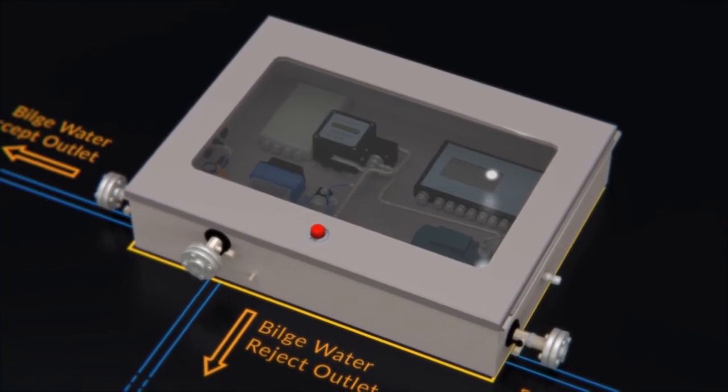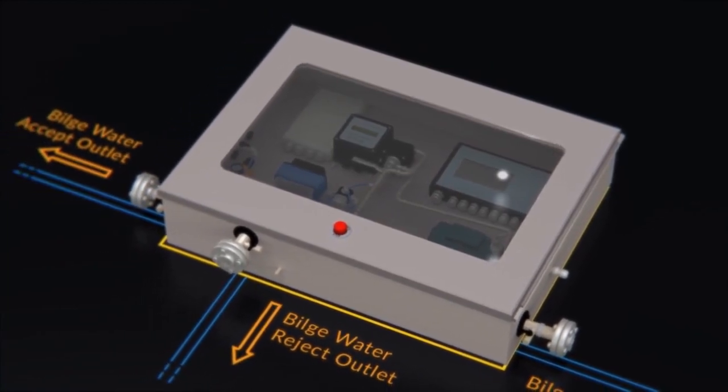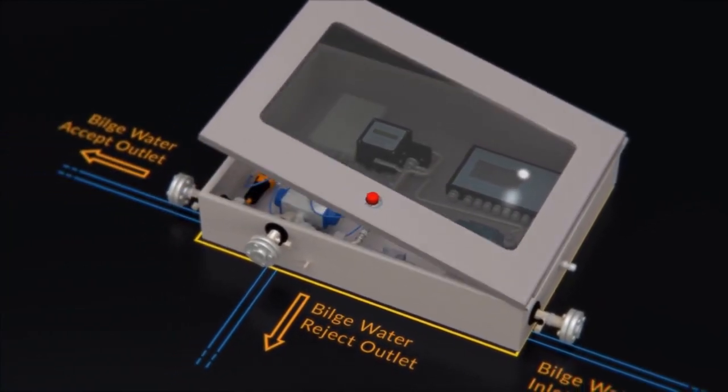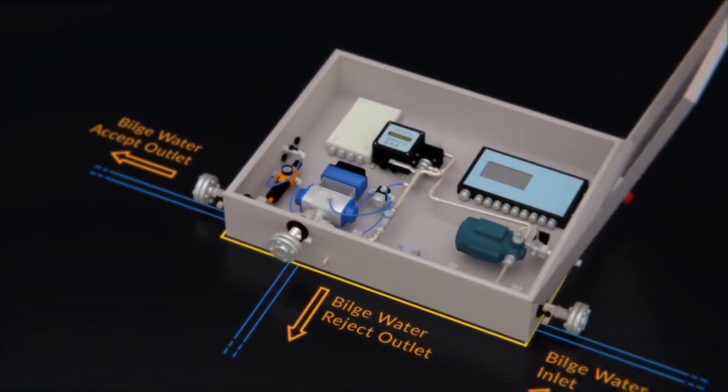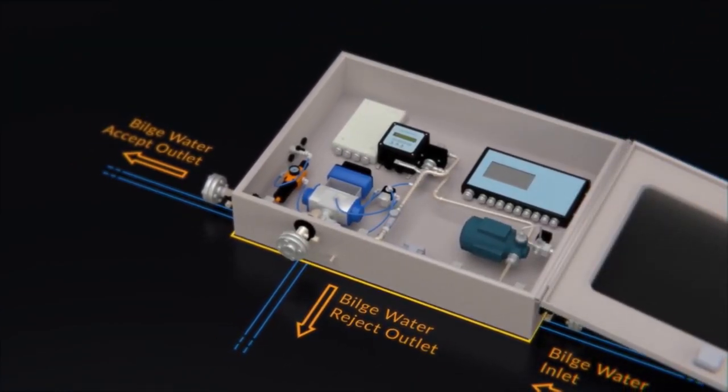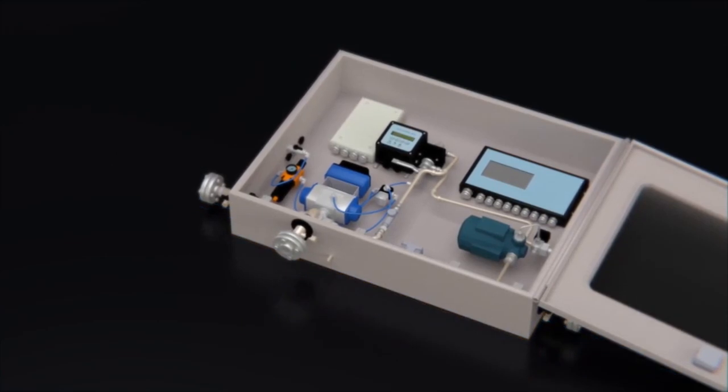It can function as an ODME system as required for tankers, but may also be fitted on other types of vessels to help prevent tampering with bilge separator overboard and monitoring arrangements.